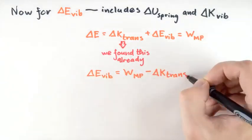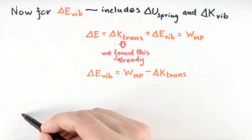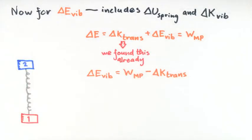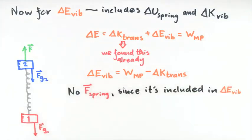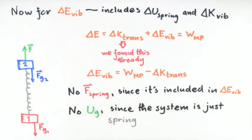When we solve for delta E vibe in the energy principle, we need to compute all the work done on the system by the surroundings. There are three separate work terms here. For the top block, block 2, there are two work terms: work done by the upward pulling force and work done by the weight force F sub G on 2. For the bottom block, block 1, there is only one work term — the work done by the weight force F sub G on 1. Notice the effect of the spring on both blocks is already accounted for by delta E vibe, so there is no spring force to include here. Also, there is no gravitational potential energy, since the Earth is not part of the system.